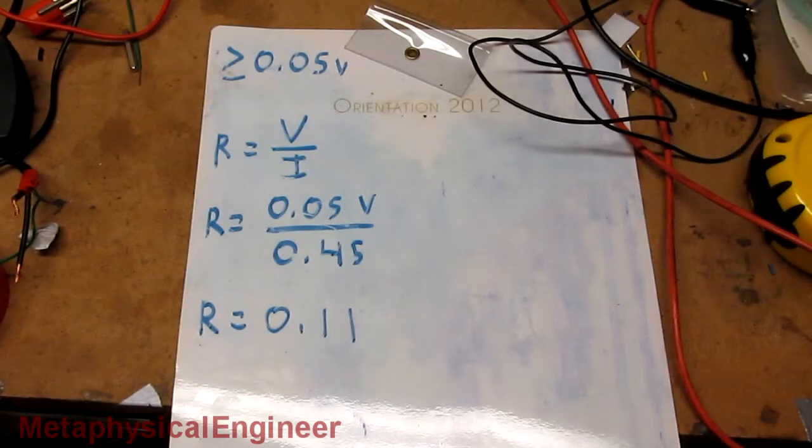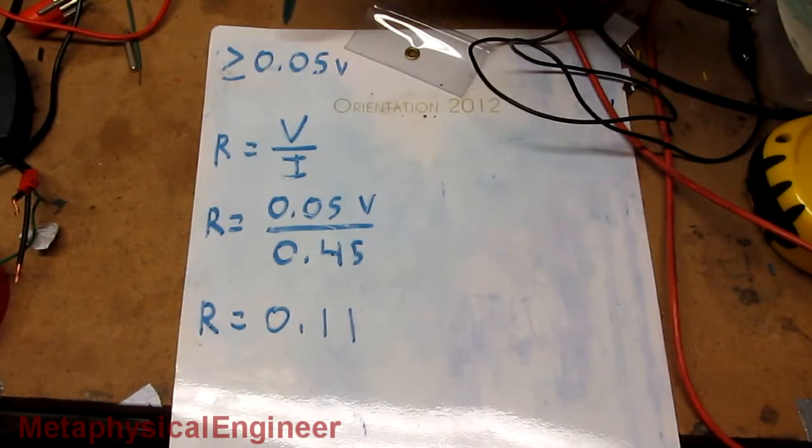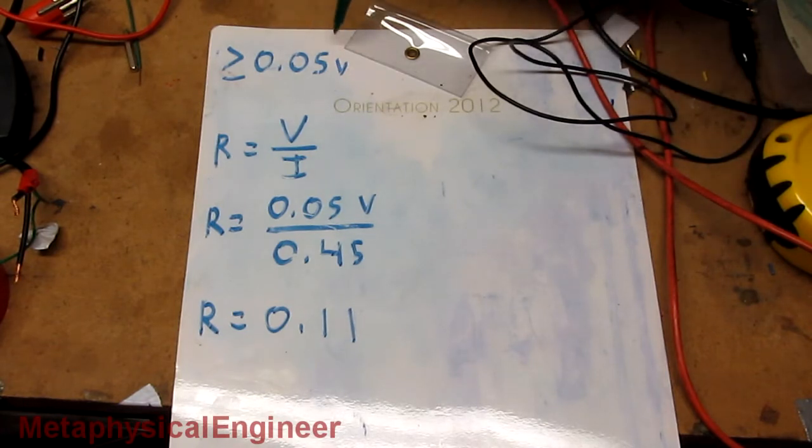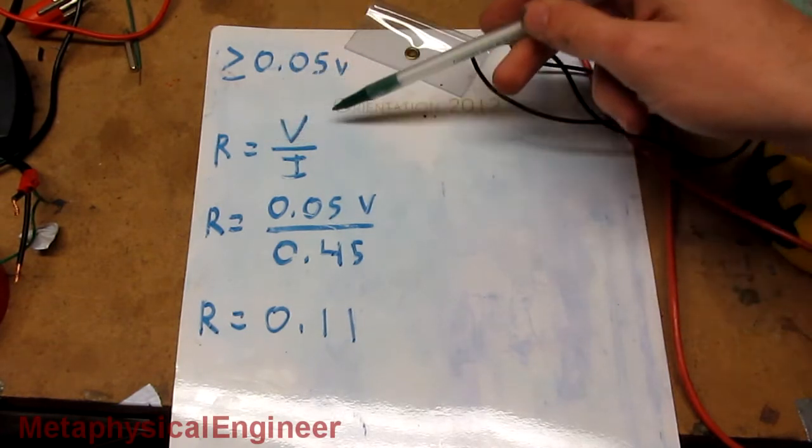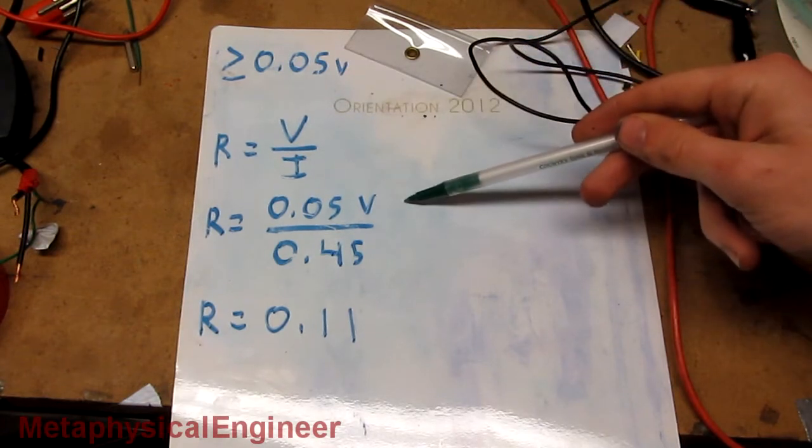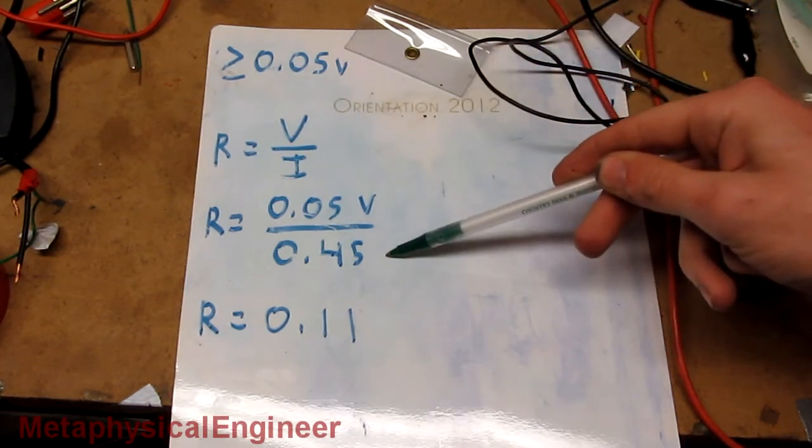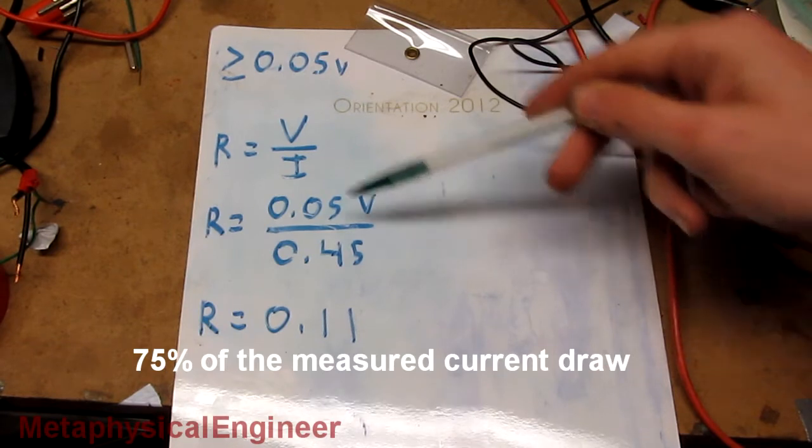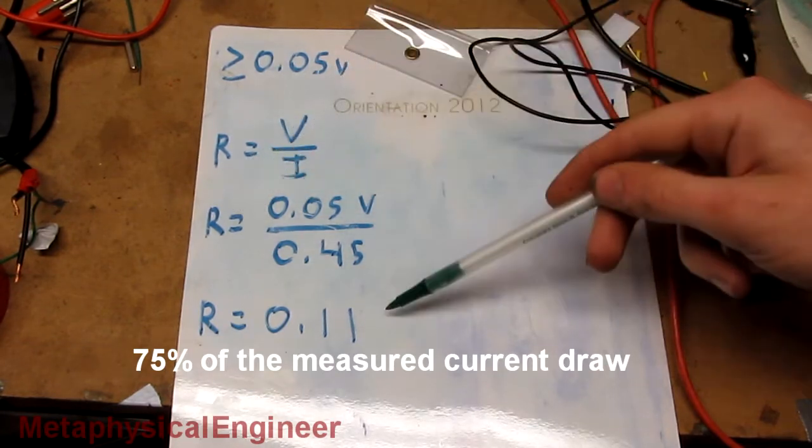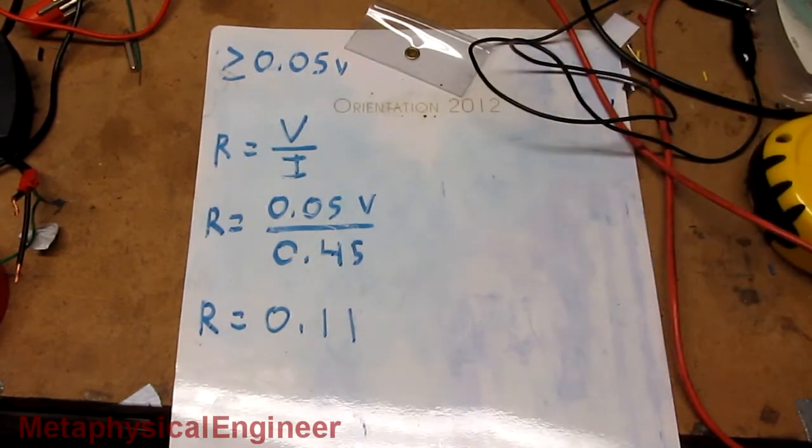And here's the last of the math. What we want to see, let's say for safety's sake, greater than 0.05 volts. Resistance equals voltage divided by current, 0.05 volts divided by, again for safety's sake, 0.45 amps, and that gives us a resistance of 0.11 ohms.